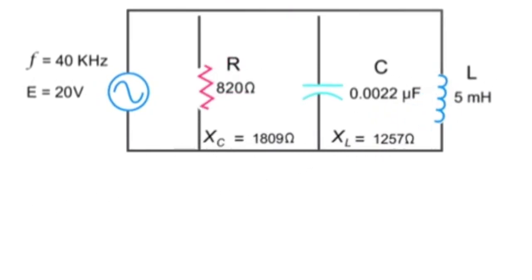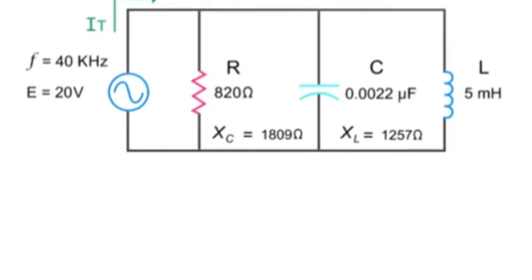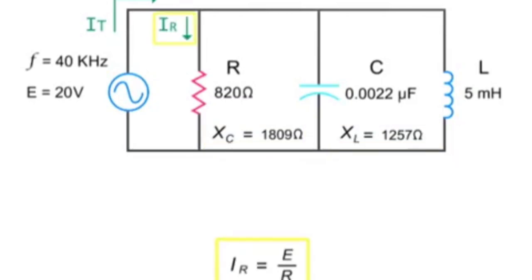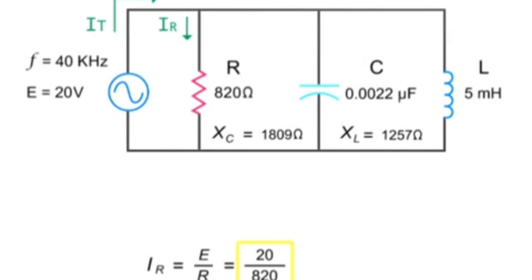Using similar equations, you can also solve for the various current values in a parallel circuit. In this case, we'll use the same resistance values obtained previously for the series circuit. To calculate the current through the resistor, divide the source voltage by the resistance at the resistor, which is 20 volts divided by 820 ohms, which equals 24.4 milliamps.